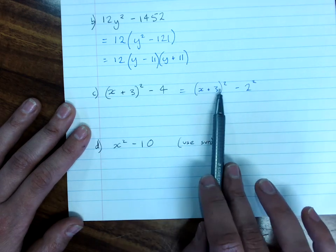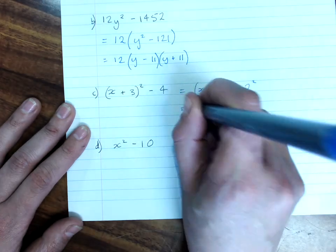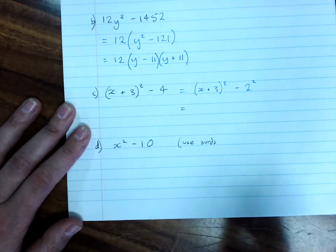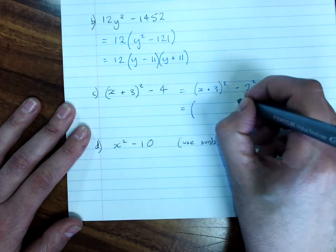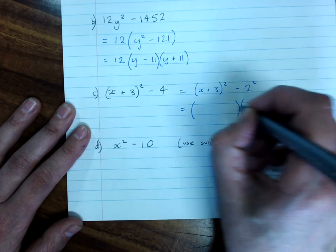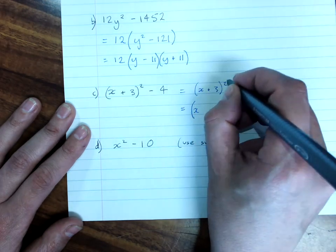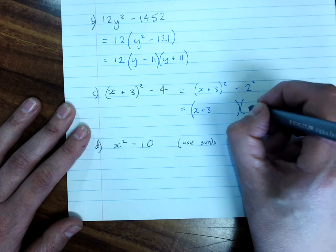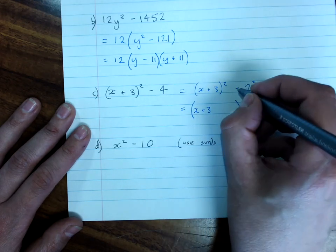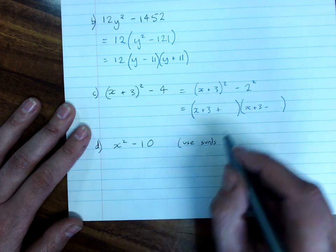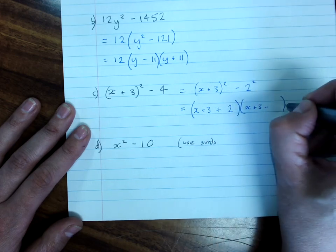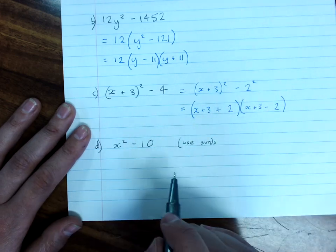Now, we have to put the first term at the start of the brackets. And we might want larger brackets for this, because our first term, or the square root of our first term, is x plus 3, plus and minus. The square root of our second term is 2.